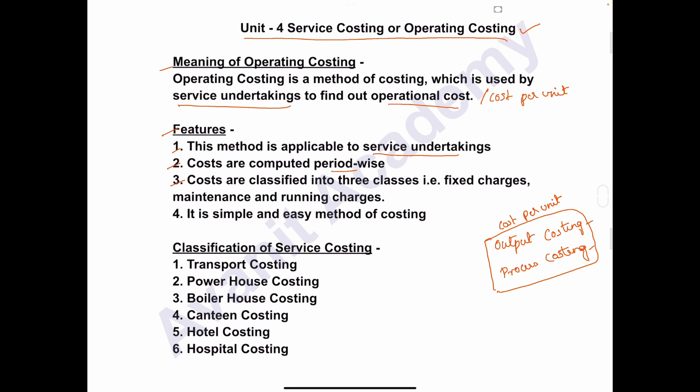Feature number three: costs are classified into three classes — that is, fixed charges, maintenance charges, and running charges. Feature number four: it is a simple and easy method of costing. So operating costing is the simplest and easiest method of costing.